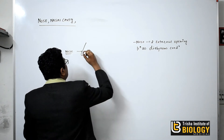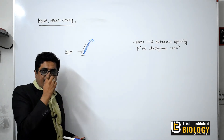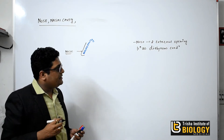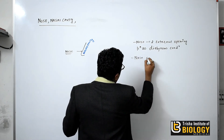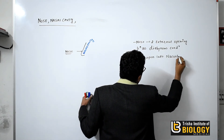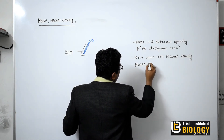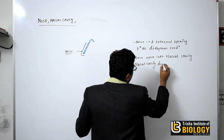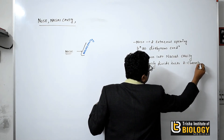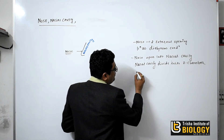The nose opens into the nasal cavity. This nasal cavity is divided into two chambers with the help of one cartilage, and it is known as the septal cartilage.